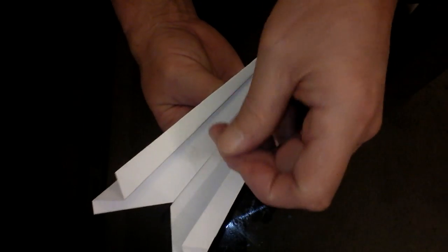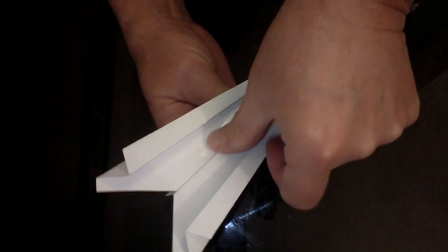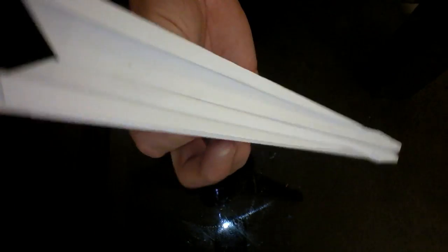There, it's done. And the most important part: take a little piece of tape. See how this thing keeps spreading apart? Take a little piece of tape, put it on there to hold those two edges together. Now you got an airplane.